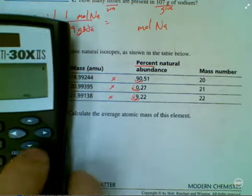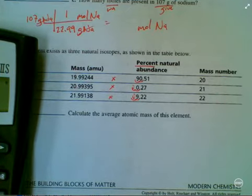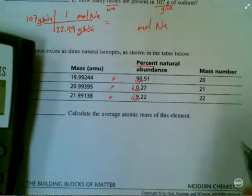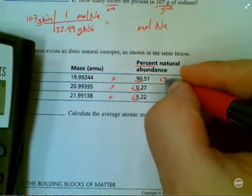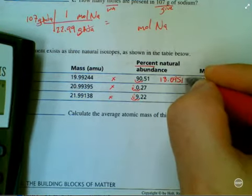Pardon my calculator being off the side. 19.99244 times 0.9051. Come up with 18.0951.